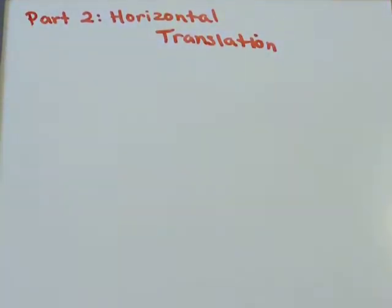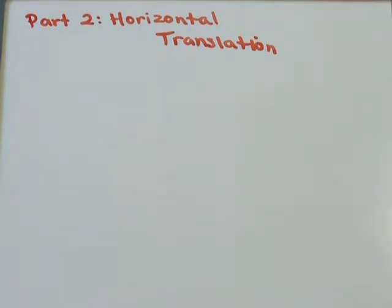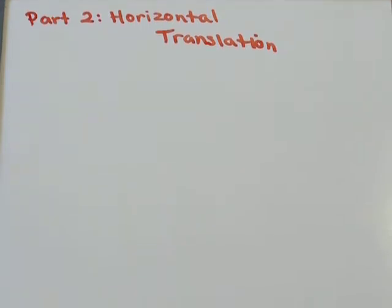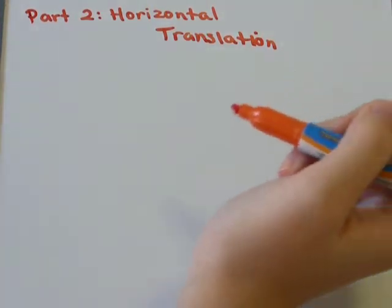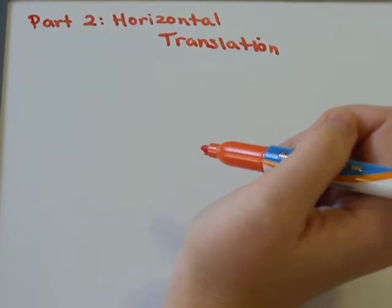In this video, we're going to talk about horizontal translation. If you're graphing something, you're going to apply a horizontal translation to your graph. I already did part one, which was vertical translation. If you missed that one, you can check that out. This time, we're doing horizontal translation.